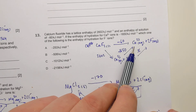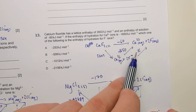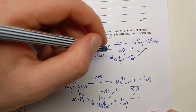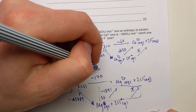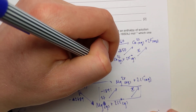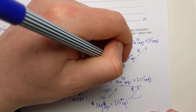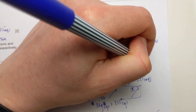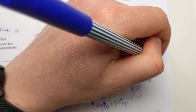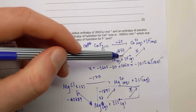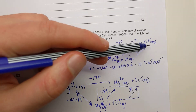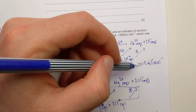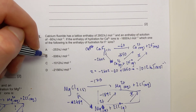The total hydration (minus 1650 + x) equals the alternative route: minus 2602 then minus 60. So x = minus 2602 minus 60 plus 1650 = minus 1012. But careful — that's a trap answer (answer C). This is for two moles of fluoride ions, so divide by two: minus 1012 ÷ 2 = minus 506 kJ/mol, which is the correct answer.